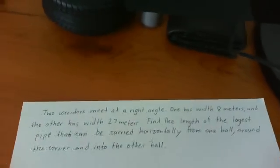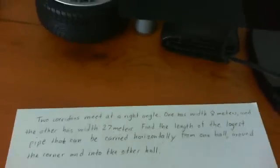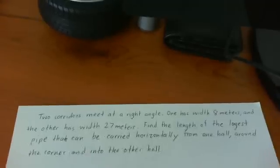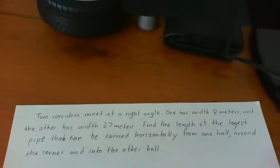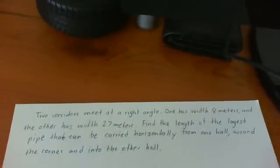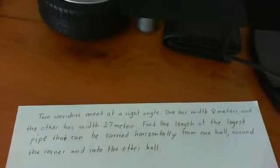So the problem was two corridors meet at a right angle. One has width 8 meters and the other has width 27 meters. Find the length of the longest pipe that can be carried horizontally from one wall around the corner and into the other hole.